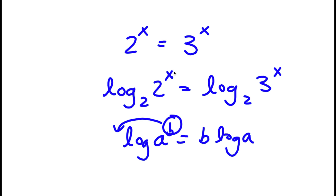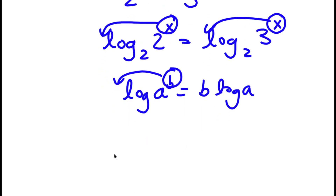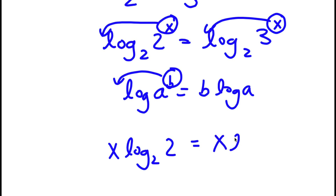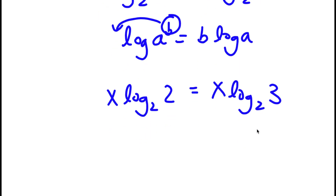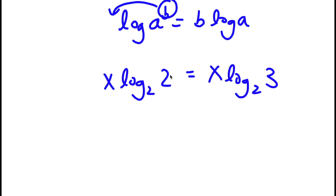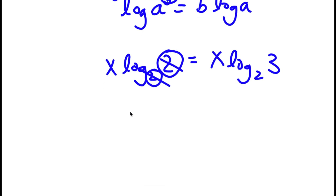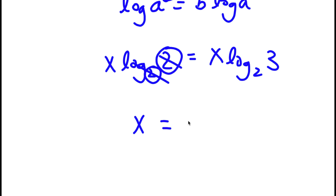So I can move x to the front on both sides. Now I have x times log base 2 of 2 is equal to x times log base 2 of 3. Now log base 2 of 2 — since the base and the argument are the same, they simply equal 1. So on my left hand side I'm simply left with x is equal to x times log base 2 of 3.